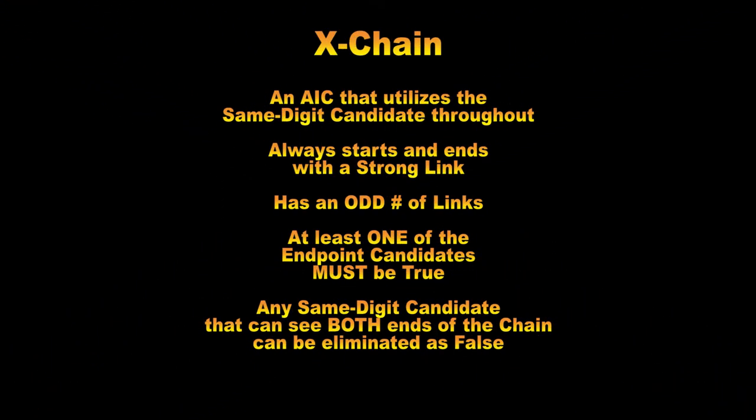All three of the simple chains we are going to review today are X-chains. This means that every node in the chain will be the same digit — like the chain will be composed of all threes or all sevens. The starting node and the ending node will be two instances of the same digit candidate. And all three types — turbo fish, two-string kites, and skyscrapers — are AICs or X-chains of exactly three links: strong, weak, strong.